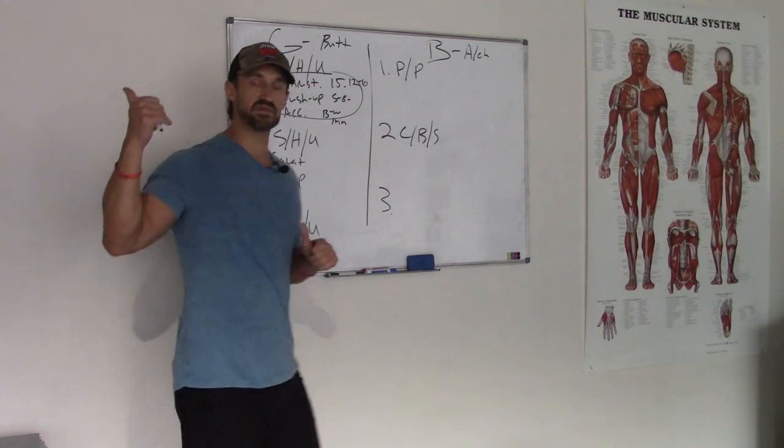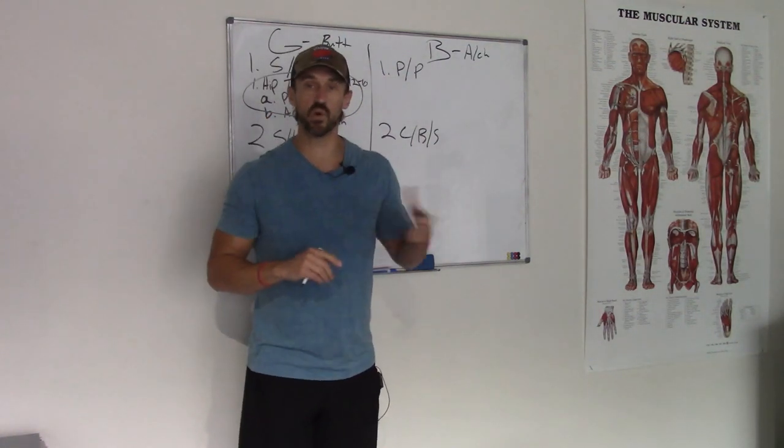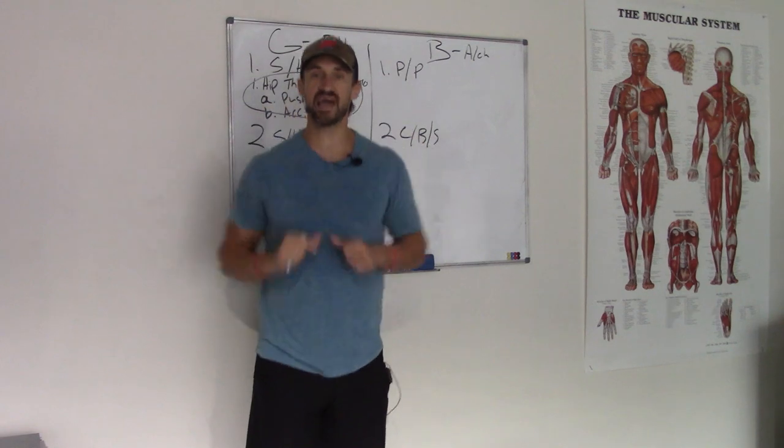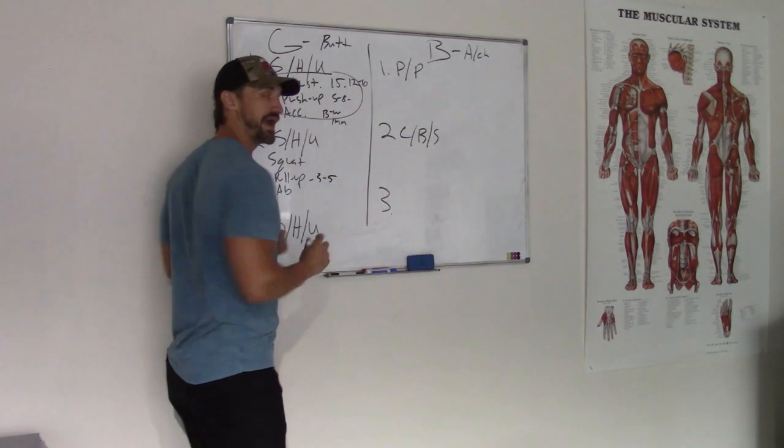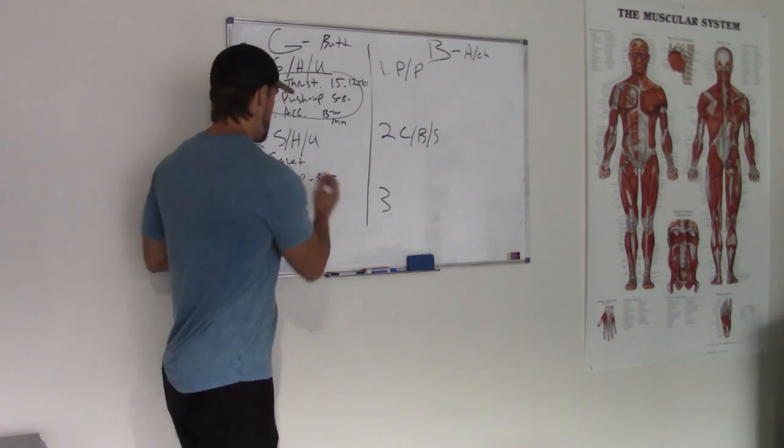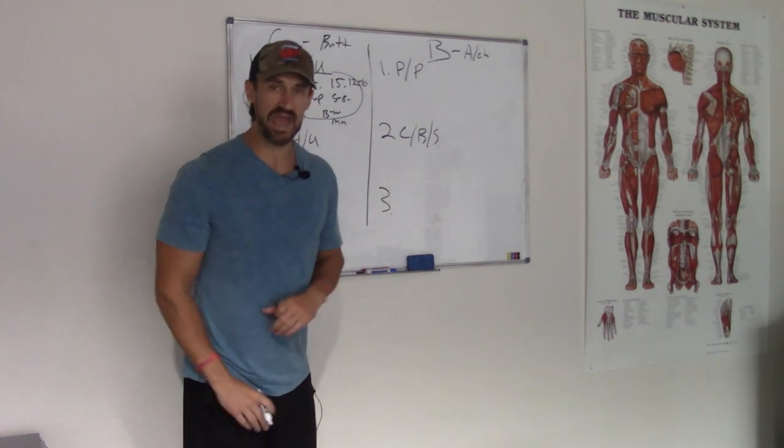Pull up. Bring them to the pull up bar, not machine or band. Lift them up. Always ask for permission before you touch the client. Focus on the eccentric. Three to five reps on the pull up. Eccentric.